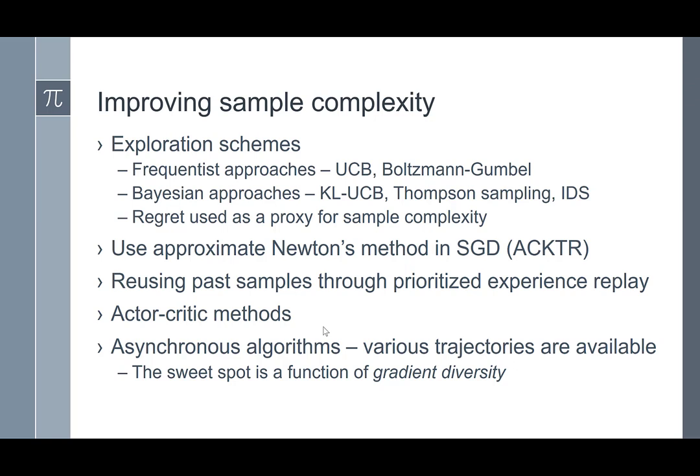The idea in asynchronous algorithms is that you get trajectories from various servers, so you can generate many samples very quickly. That improves learning performance and allows you to find an approximately optimal strategy more quickly compared to algorithms that use only a single stream of data. My gut feeling is that you can find the sweet spot using gradient diversity, but I haven't explored this topic fully — perhaps something you could explore in your future work.